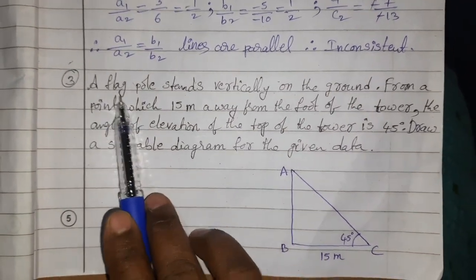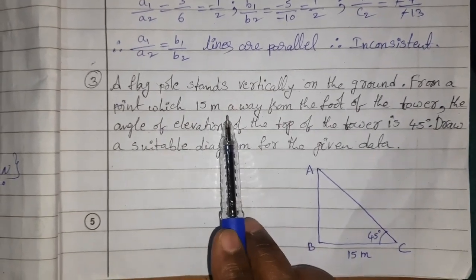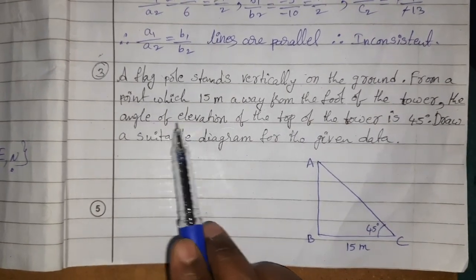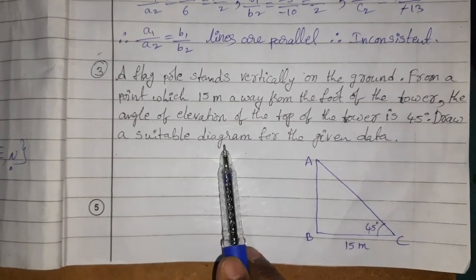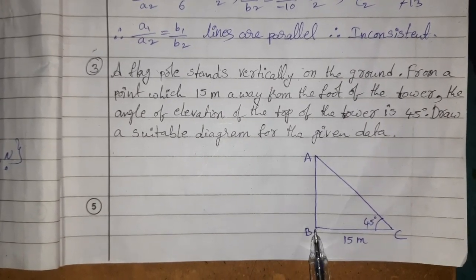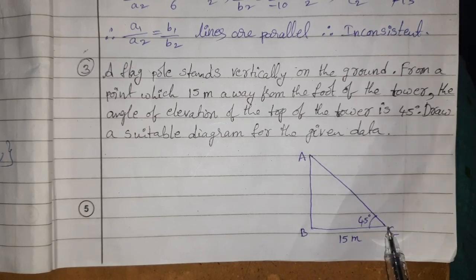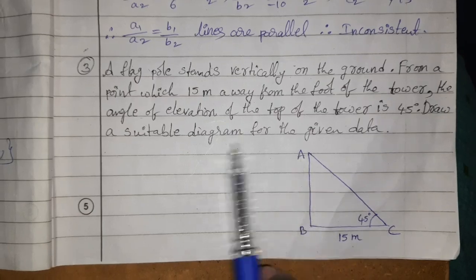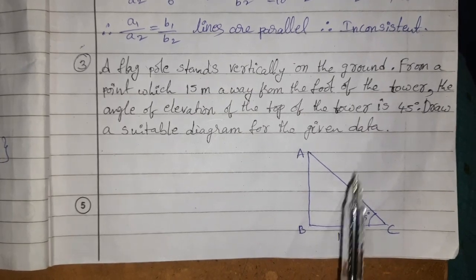Third question: a flag pole stands vertically on the ground. From a point 15 meters away from the foot of the pole, the angle of elevation of the top is 45 degrees. Draw a suitable diagram. Let the flag pole be AB, point C is 15 meters away, with angle of elevation 45 degrees.